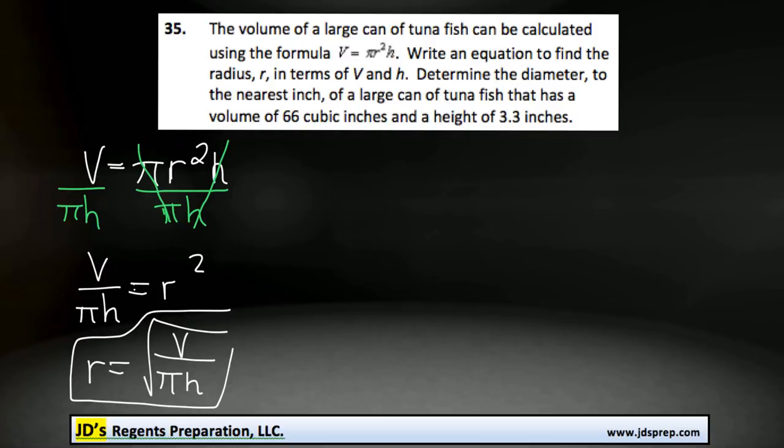And so that's it for the first part of the question. Now for the second part, it says to determine the diameter to the nearest inch of the can of tuna fish that has a volume of 66 cubic inches and a height of 3.3 inches.